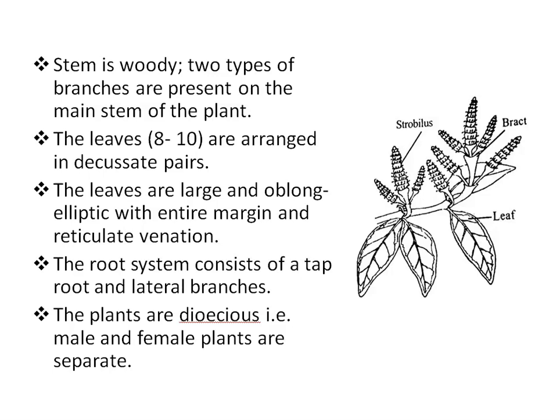The stem of Gnetum is woody. Two types of branches are present on the main stem: branches of limited growth, that is dwarf branches, and branches of unlimited growth, that is long branches. Each branch contains nodes and internodes. The stem of several species of Gnetum is jointed, meaning articulated. In climbing species, the dwarf branches are generally unbranched and bear foliage leaves. Leaves 8 to 10 are arranged in decussate pairs.